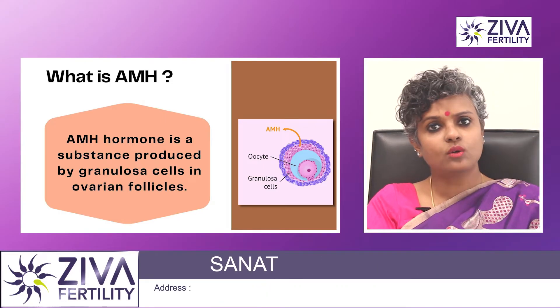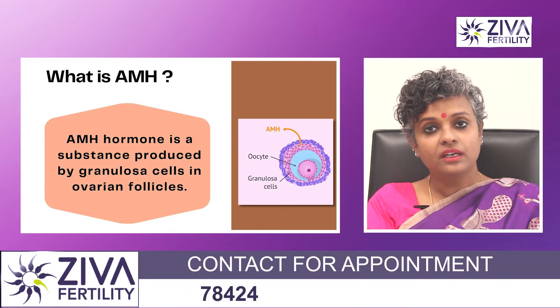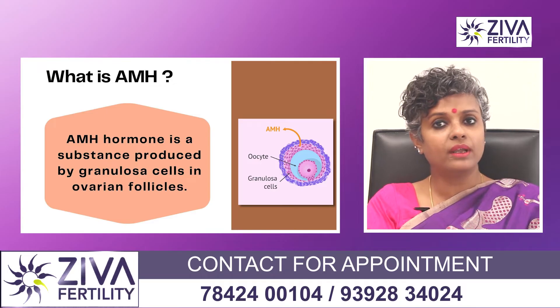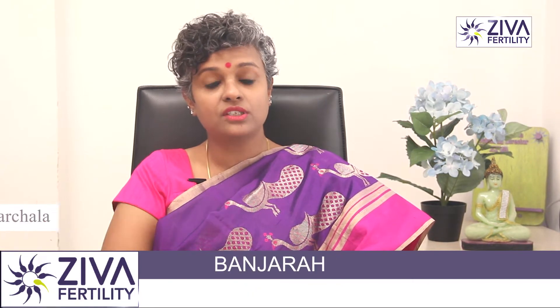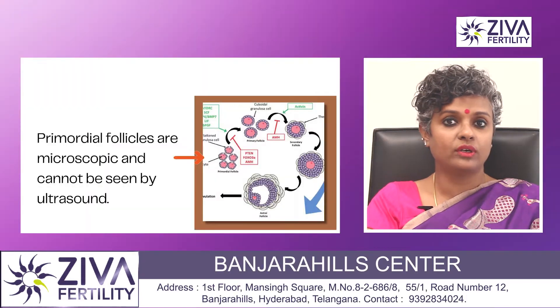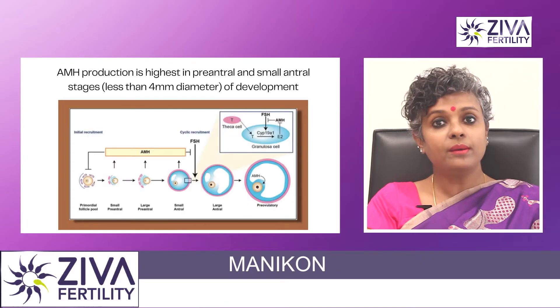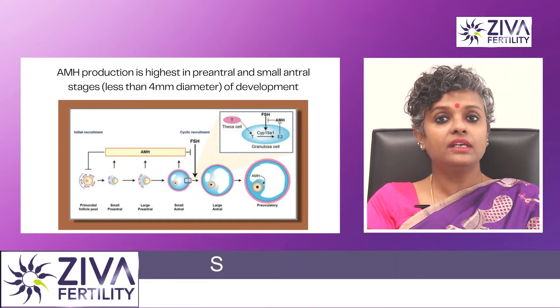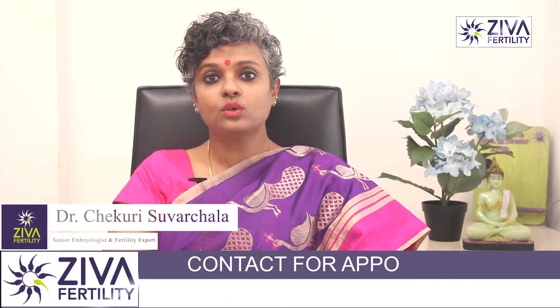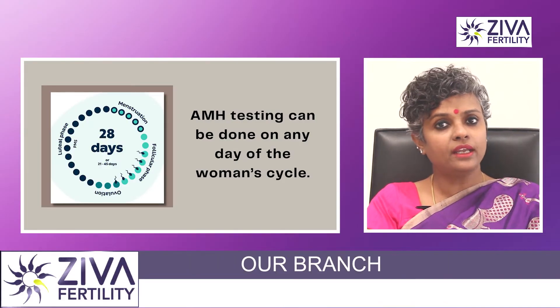AMH is basically produced by cells around the eggs, which are called granulosa cells. Inside the ovary are follicles, and inside the follicles are eggs that come in various stages. The youngest and smallest ones, which are microscopic and not even growing, are called primordial follicles and cannot be seen by ultrasound. AMH production is highest in the next stages of development, and almost no AMH is made in follicles over 8 mm. Therefore the levels are fairly consistent and AMH testing can be done on any day of a woman's cycle.